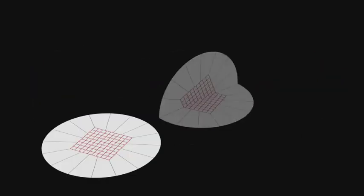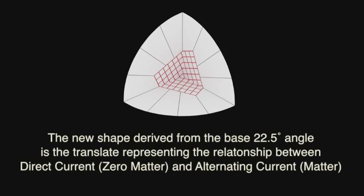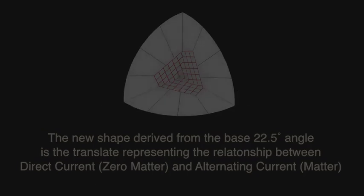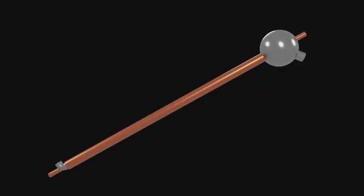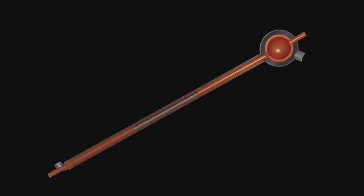The octave model, when folded, demonstrates the alteration of the area-time volume as it metamorphoses from the high charge density fifth dimension to the low charge density first dimensional base. The new shape derived from the base 22.5 degree angle is the translate representing the relationship between direct current, which is zero matter, and alternating current, which is matter. Rectifying the zero matter, which operates on a base of 12, and matter, which operates on a base of 16, is essential to any torus-spiral collision-based fusion device capable of operating at room temperature and above.